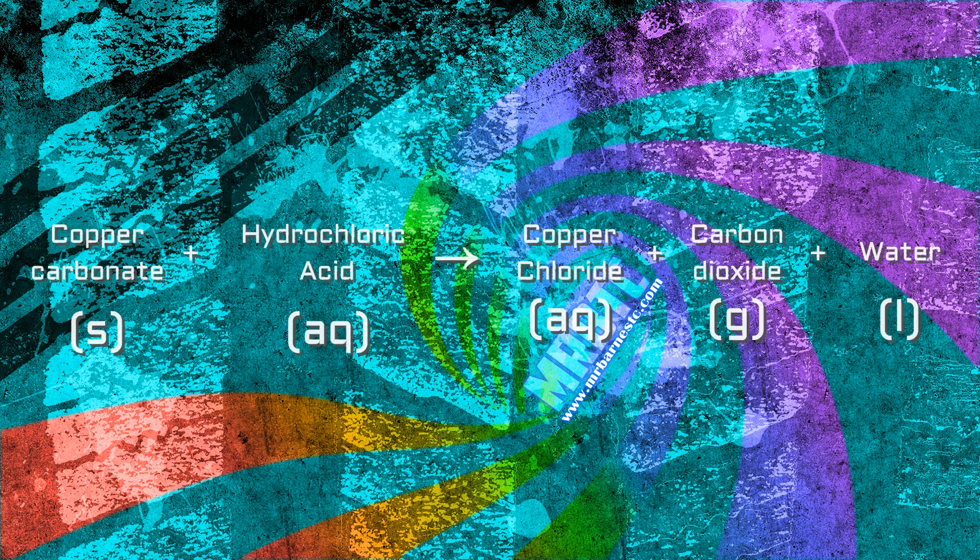So let's use this to predict one. So if we have a look at the word equation which is copper carbonate plus hydrochloric acid makes copper chloride plus carbon dioxide plus water.